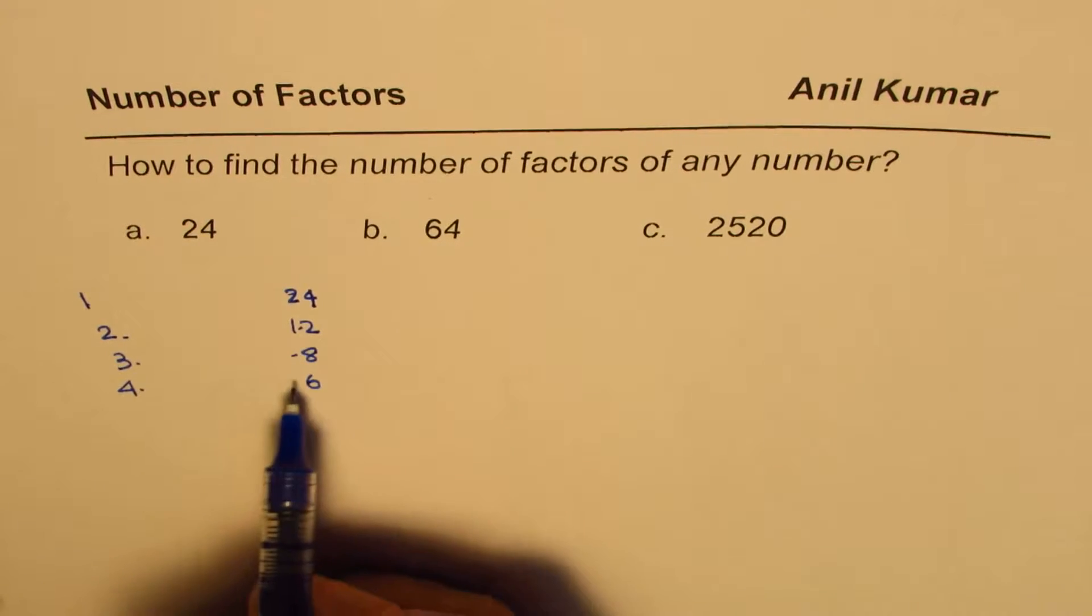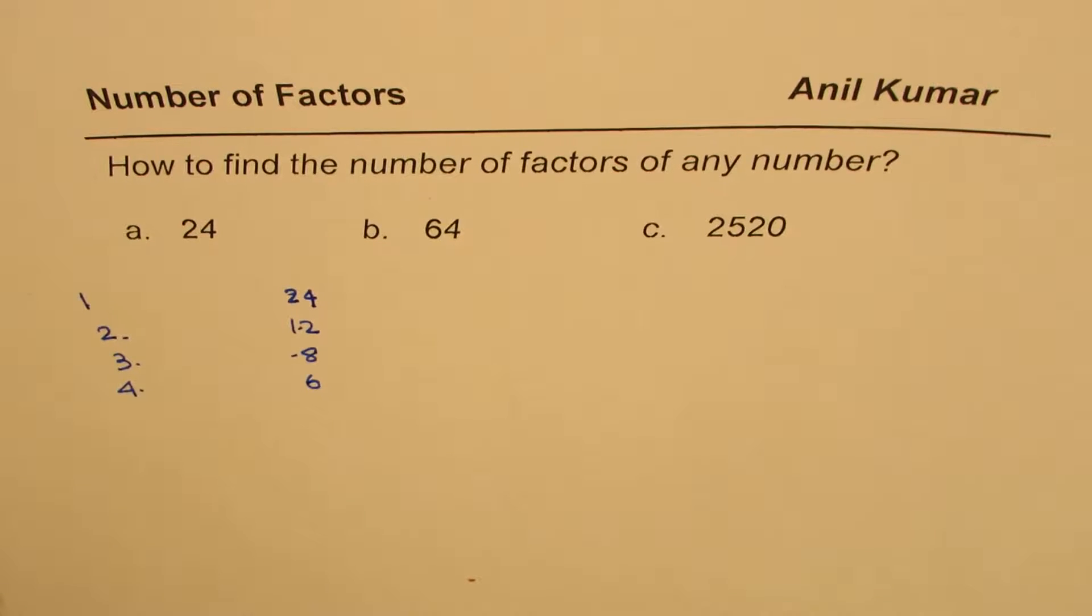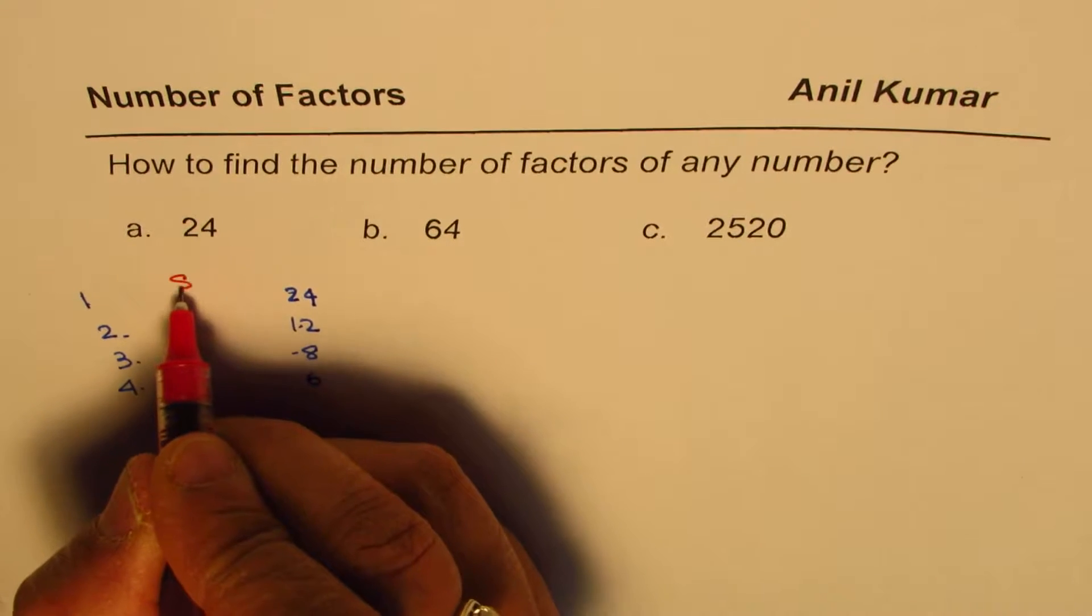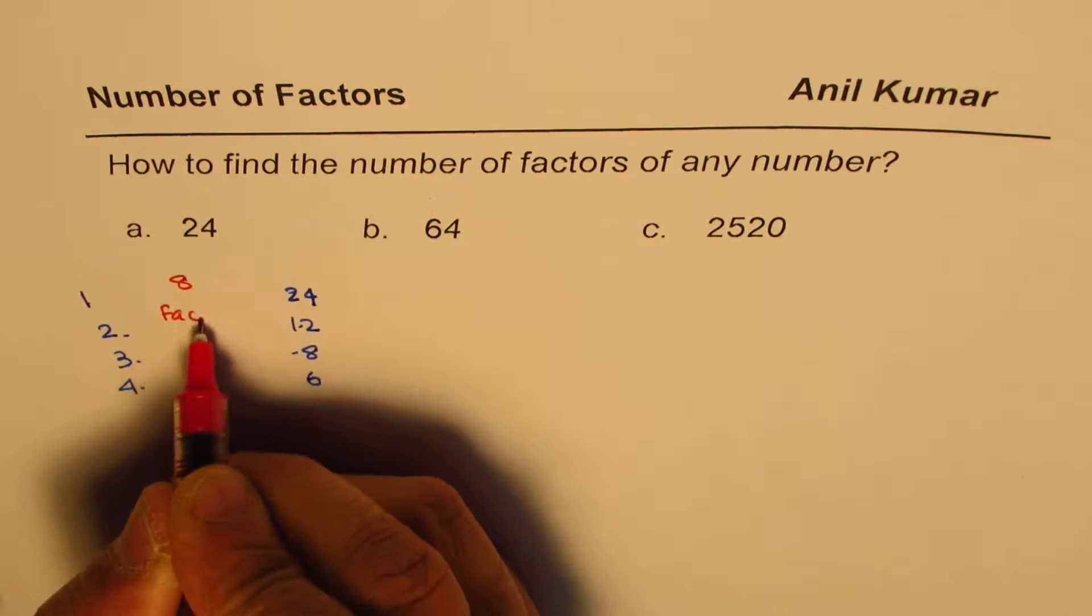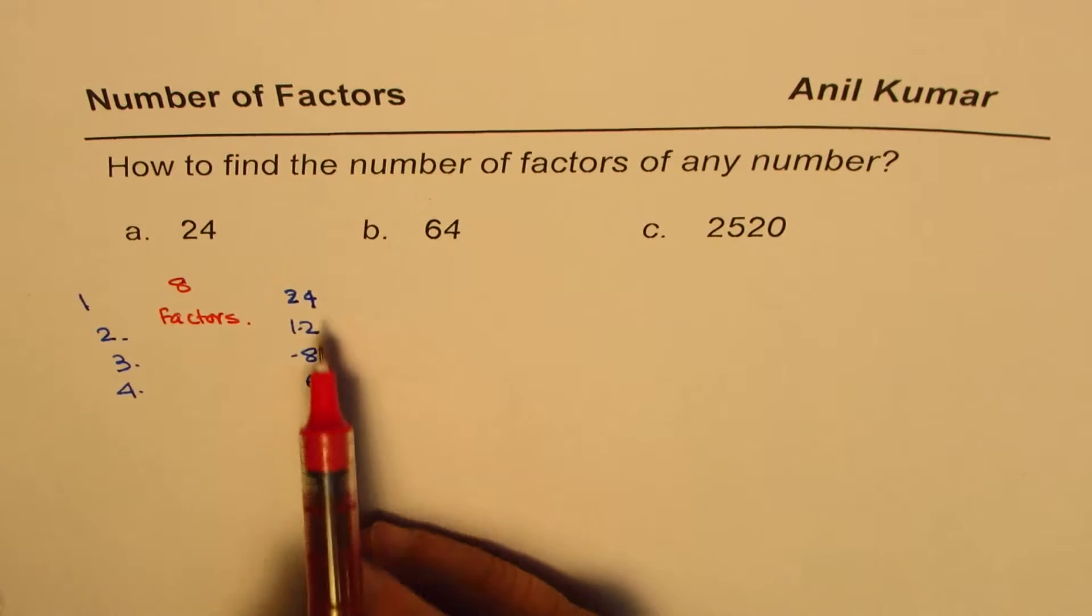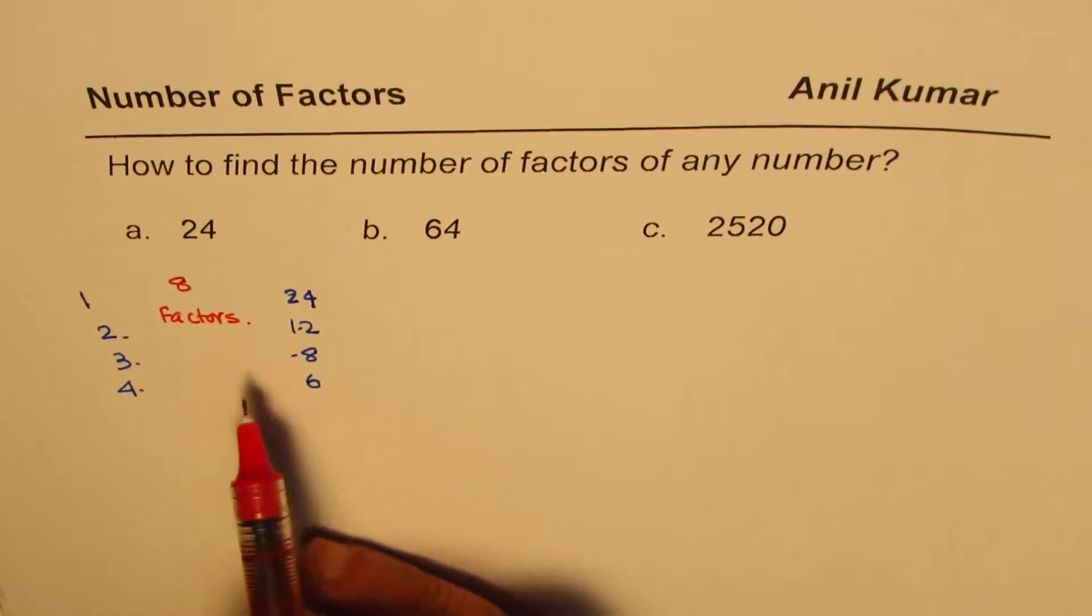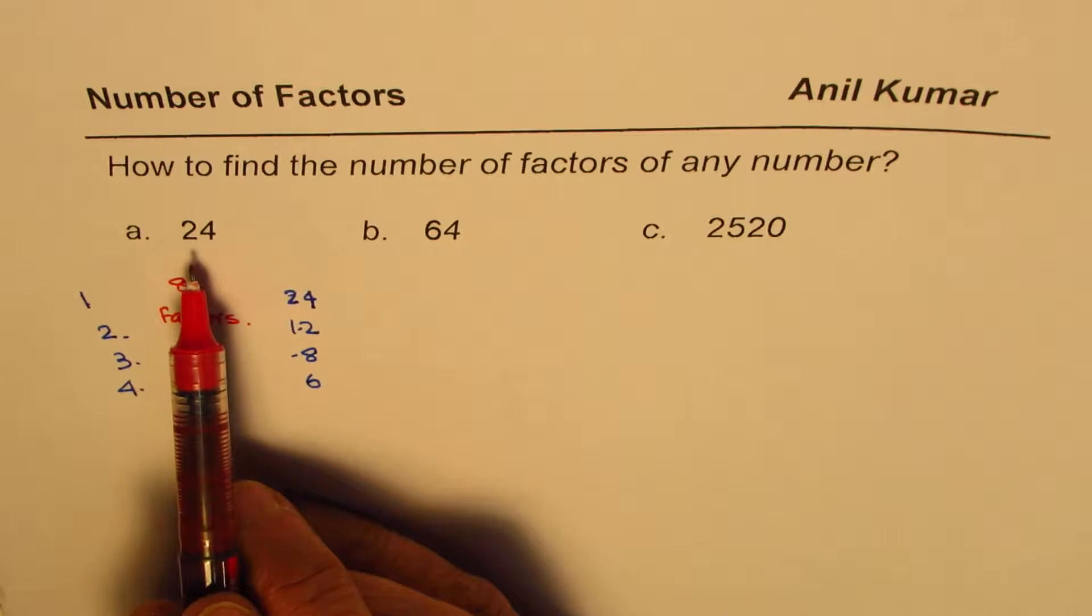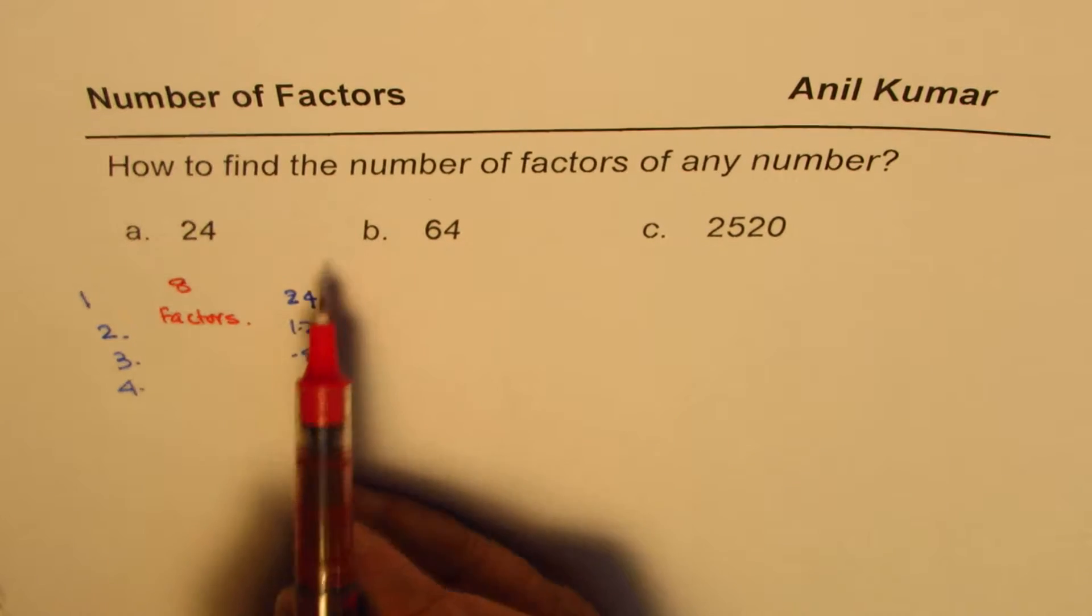4, 5, 6, 7, 8. So that gives us 8 factors. So it's just 8 factors. So we found by listing out all the factors, and this is a good process, but it works only when we have small numbers like 24 or so, right? 2-digit numbers, it can work well.